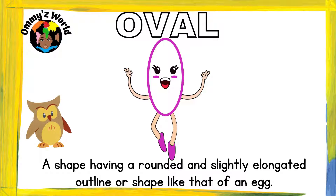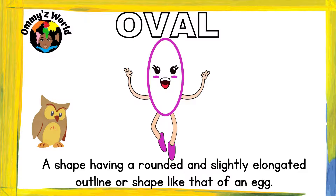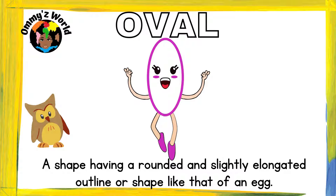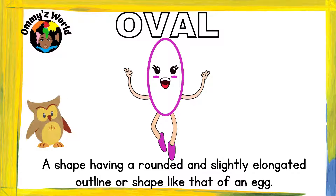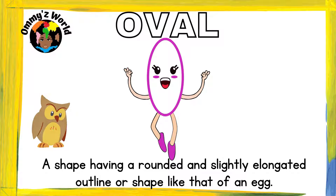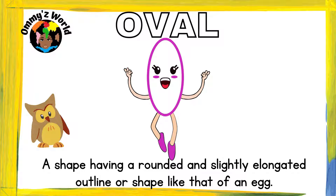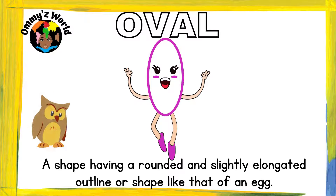The next shape is an oval. An oval is a shape that has a rounded and slightly elongated outline, or it's shaped like that of an egg. We all know what an egg looks like.